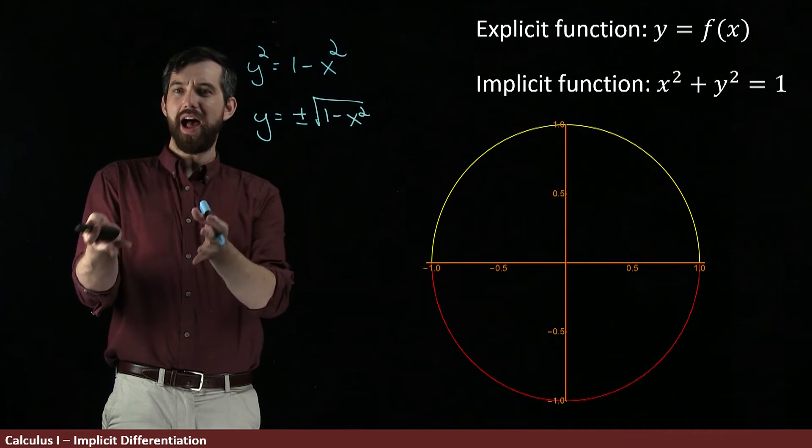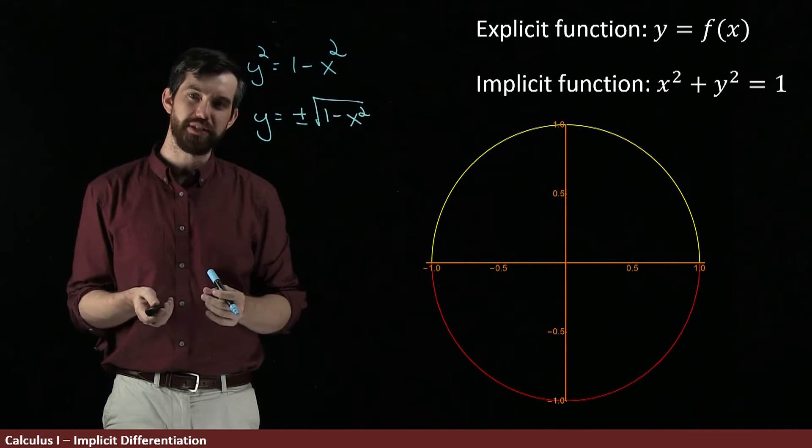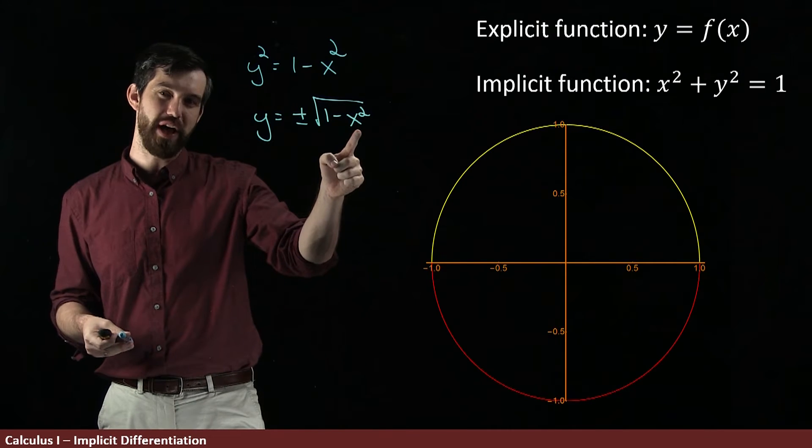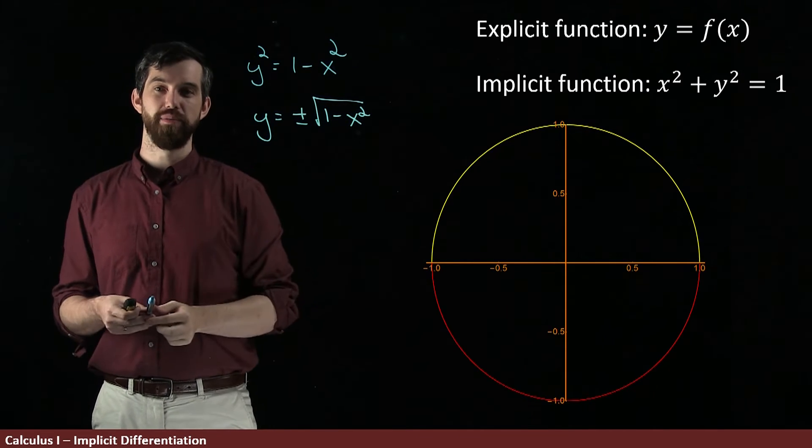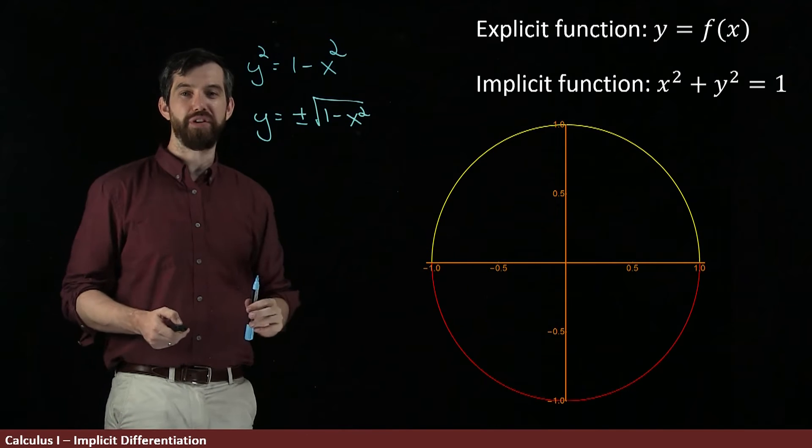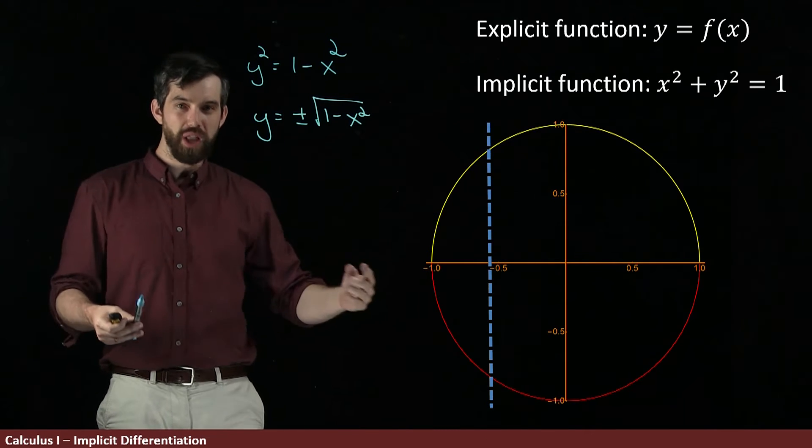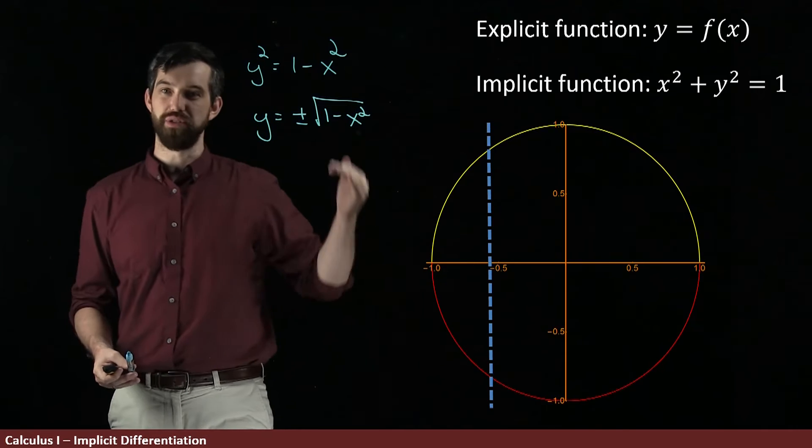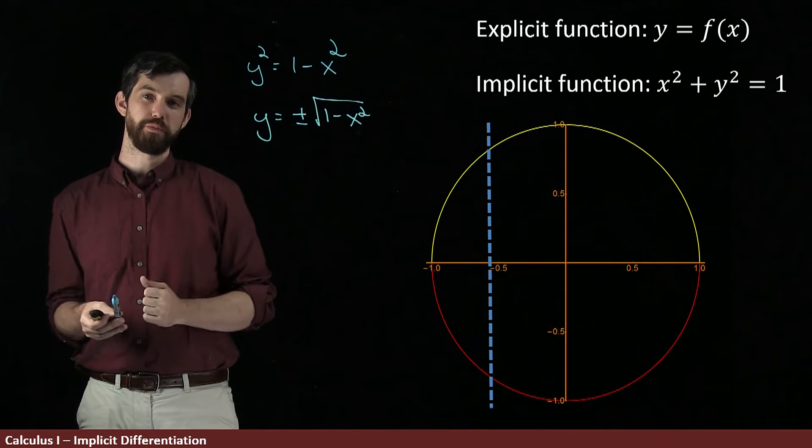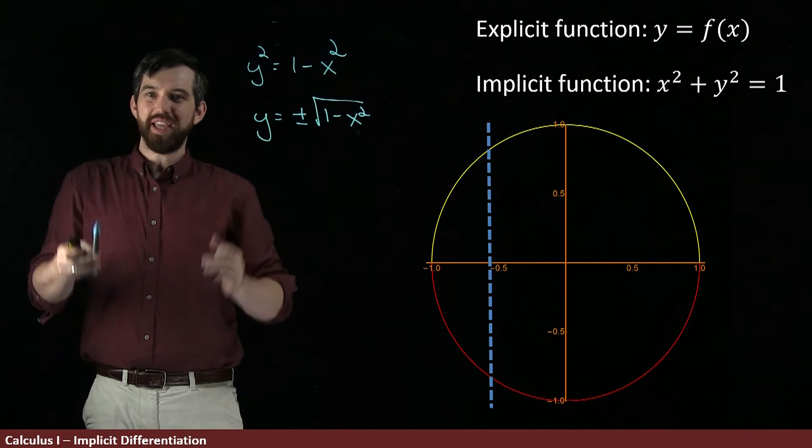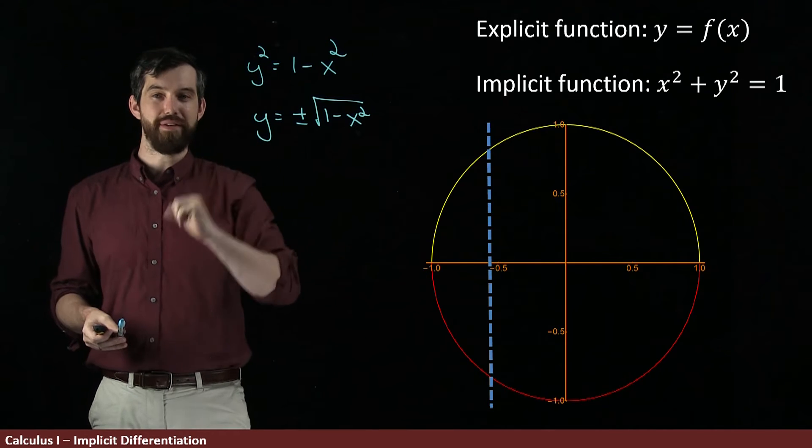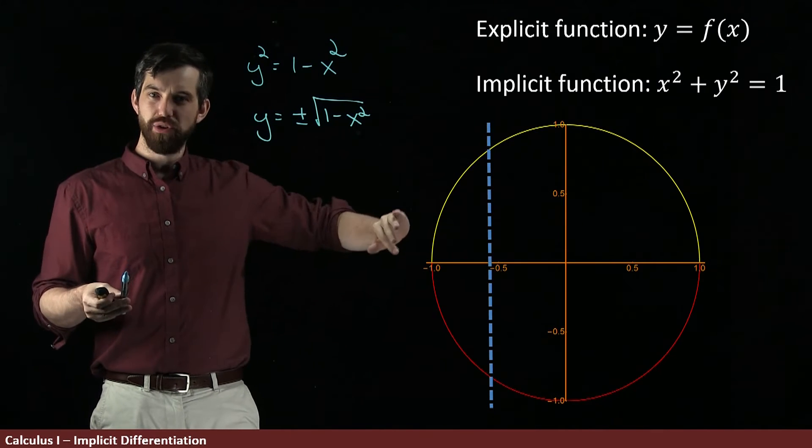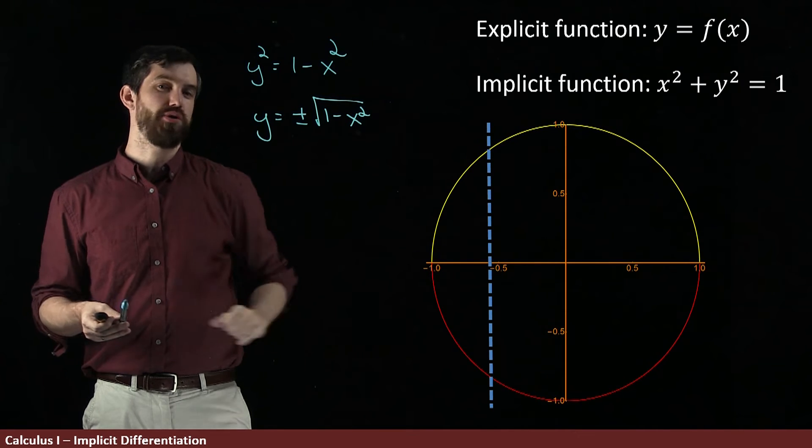But this violates the vertical line test. To be a function, it needs to be the case that for every x value, there's exactly one y value. Or if I want to think about it graphically, what you do is you draw a vertical line and you say, well, look, for this particular x value, there's two different y values, this top and this bottom, that correspond to it. So it's not the case that we can find one function, y equals f of x, that describes this entire circle. But you'll notice that I have a yellow semicircle on the top and a red semicircle on the bottom.